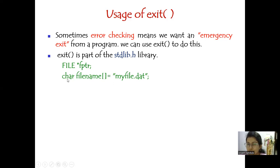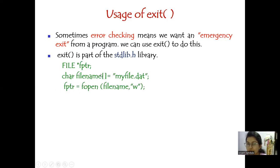We are declaring the file pointer, and here I'm also showing you a way to supply the filename as input. In fopen, the first argument is the filename as a string. Here you can see we have taken a string called filename and given it the name 'myfile.txt', and we are supplying that here followed by the mode. This is one way you can supply the filename.